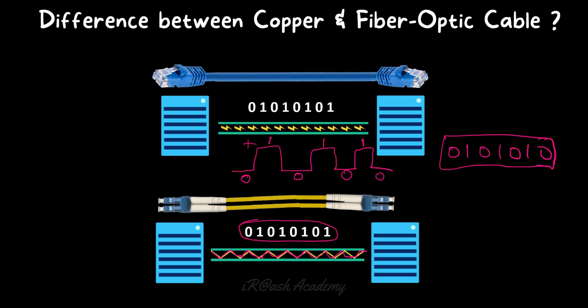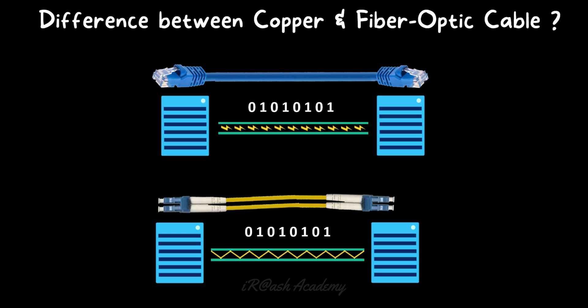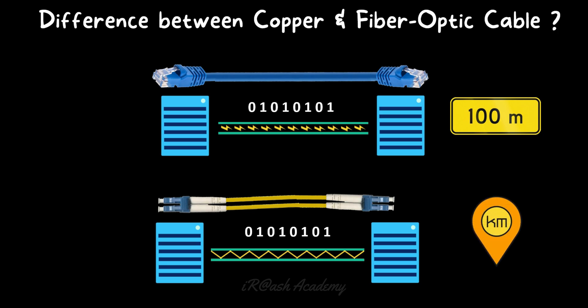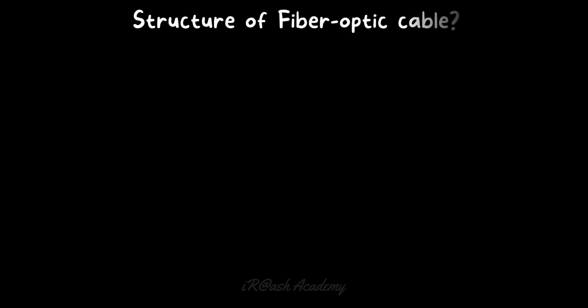There is one more key difference between copper and fiber optic cable: copper cable has a distance limitation of a maximum of 100 meters. If the cable length between source and destination exceeds 100 meters, there is a chance of data packet loss, resulting in a slower network. On the other hand, fiber optic cable can transfer data over several kilometers depending on the cable type and receiver type. Simply put, copper has a distance limitation but fiber does not.